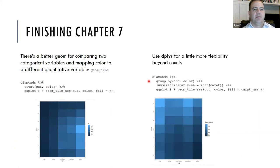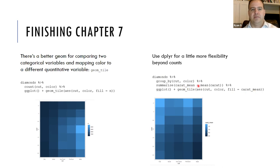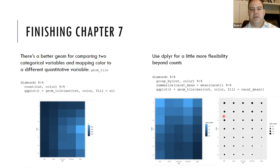You can do the same thing with dplyr for geom_tile, but it adds more flexibility beyond just count — for example using carat_mean as the fill. This is analogous to the scatterplot version where size was based on carat_mean, just presented differently: a very large dot corresponds to a light-colored tile, and a very small dot corresponds to a dark-colored tile. It's two different ways of presenting the same information.